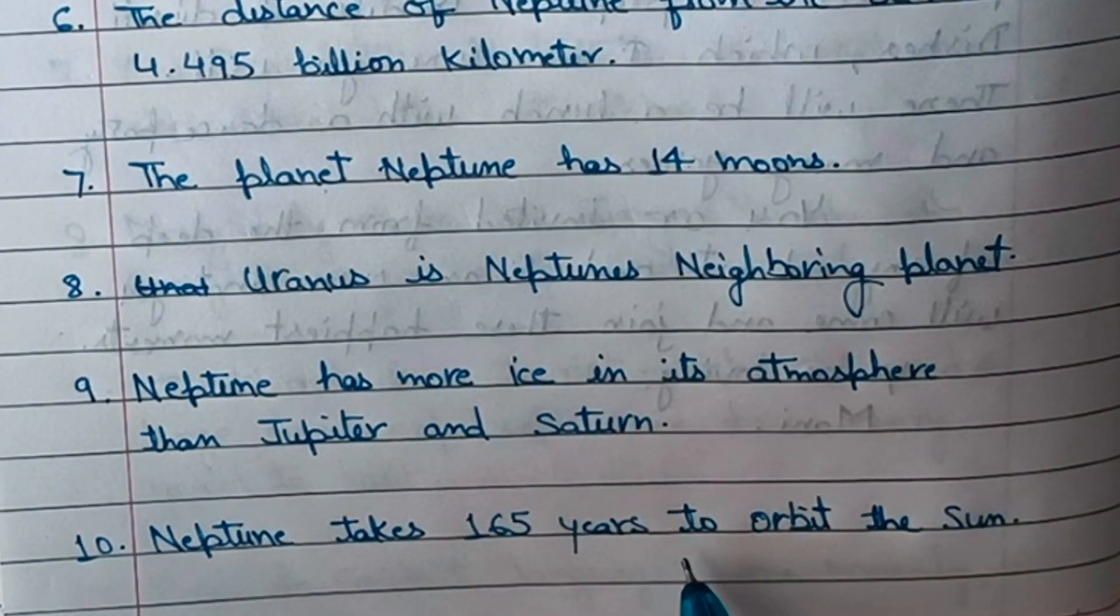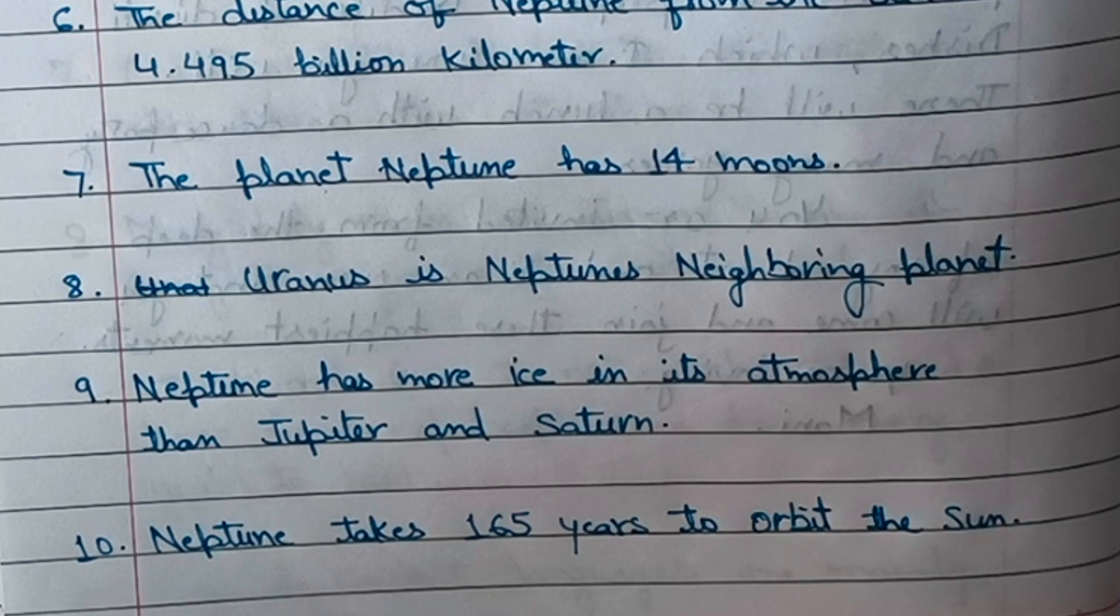Neptune takes 165 years to orbit the Sun.